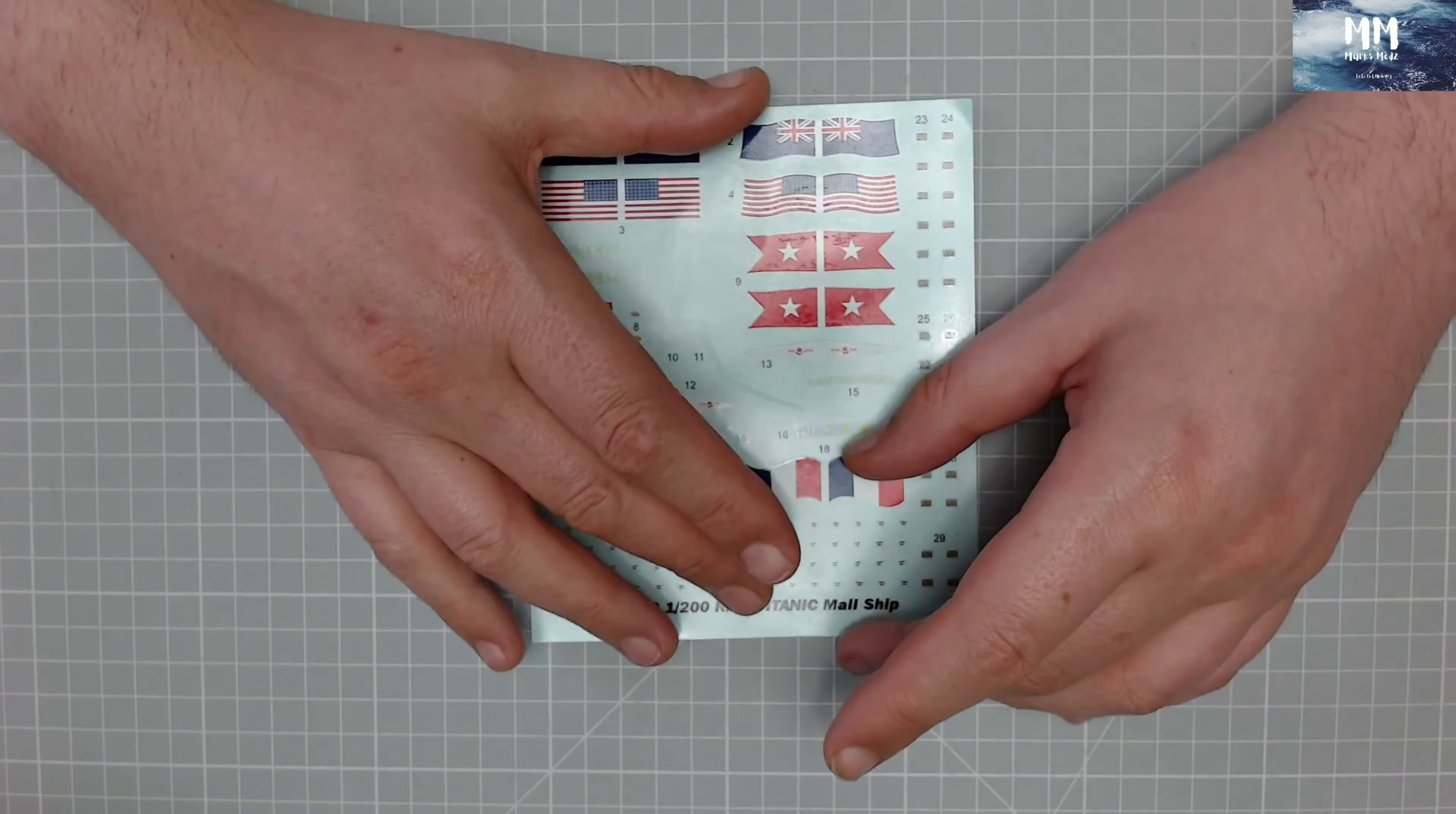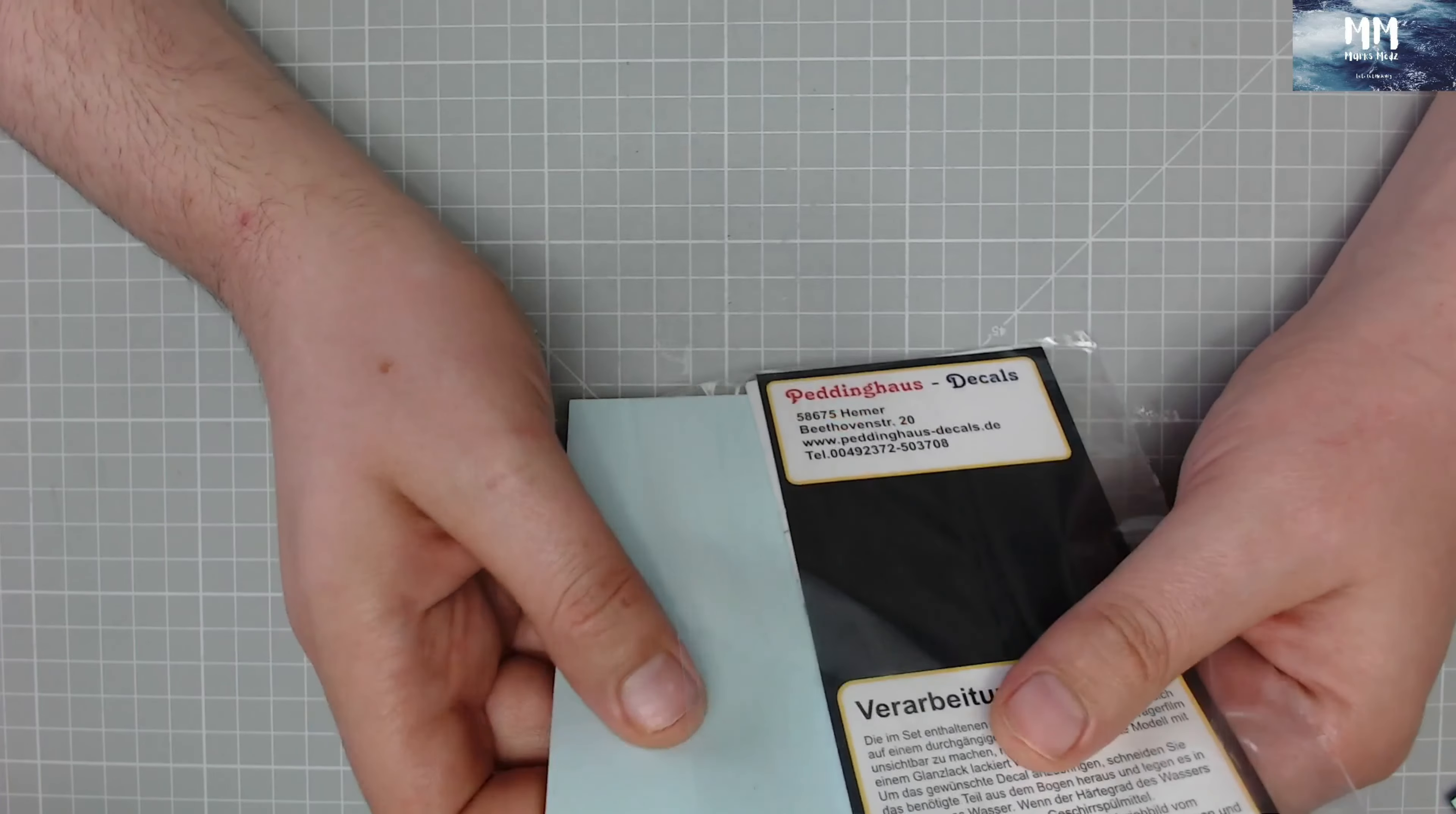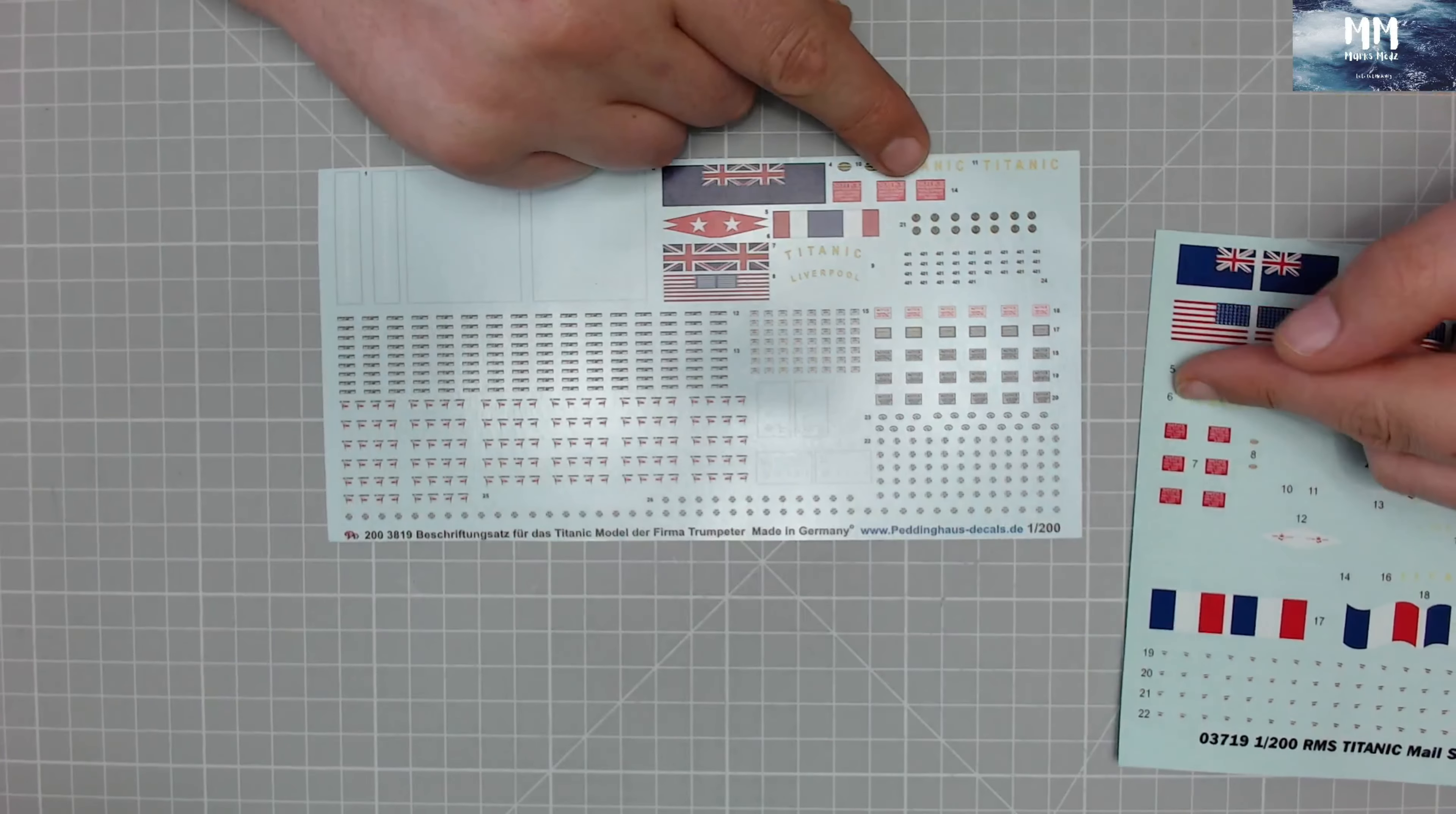So from this sheet here, which is the standard one you get, if I just put that to one side and open this. This is from, like I said, Germany. And basically, this is what you get. As you can tell, there's a few differences here.